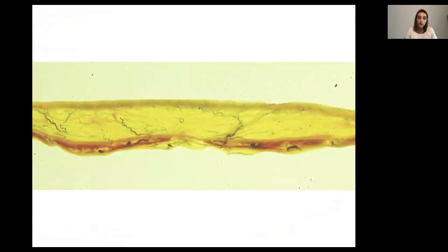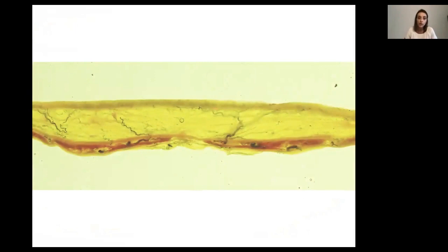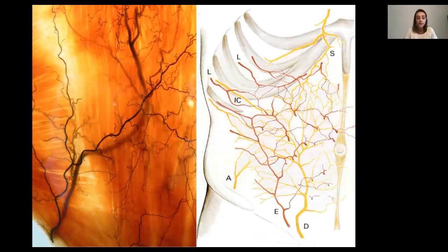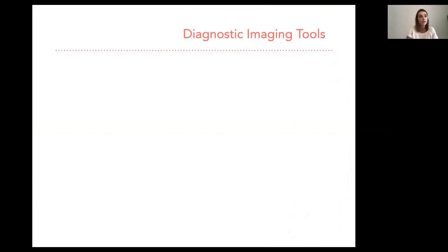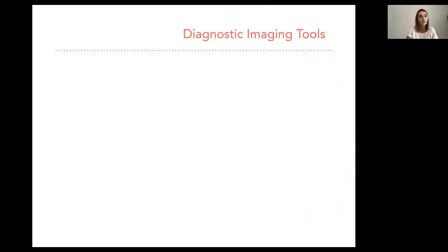We also have a superficial system. Sometimes both systems are connected; sometimes the superficial one is the dominant one, sometimes the deep one perfuses the abdominal wall better. We know there is high anatomical variability in every single person, and because of that, diagnostic imaging techniques have been very useful for preoperative planning and sometimes to perform a virtual surgery before the real one.